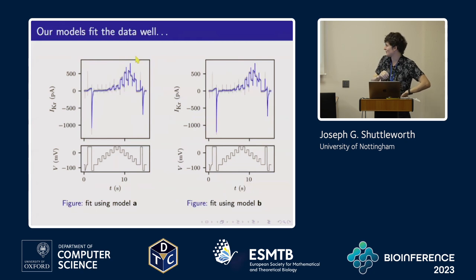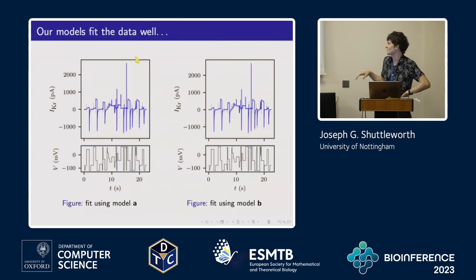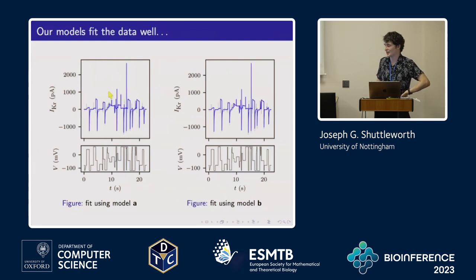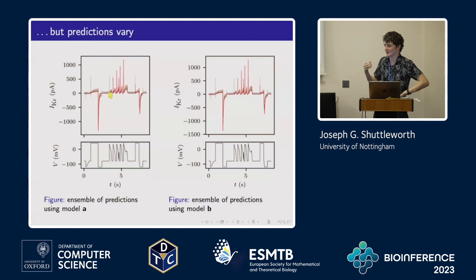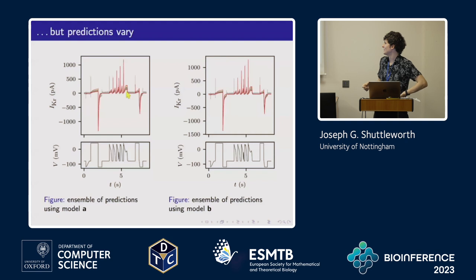Both model A and model B structures do a pretty good job on D0, but on protocol D4 not so much — there are parts of the protocol where we're seeing a lot of model discrepancy and neither model can fully capture the behavior, which obviously impacts the parameter estimates obtained. Because of this, when we take all those parameter sets from the different experiments and plug them back into the validation protocol, we see a big spread in predictions, indicating the model isn't capturing every possible voltage signal perfectly.